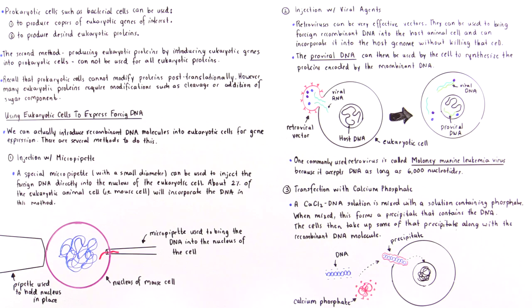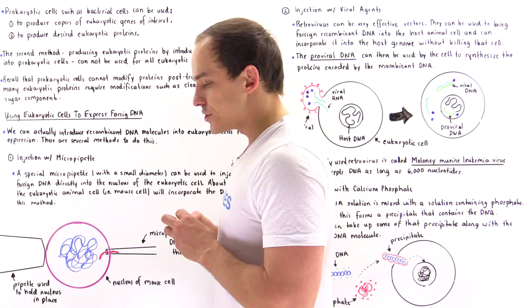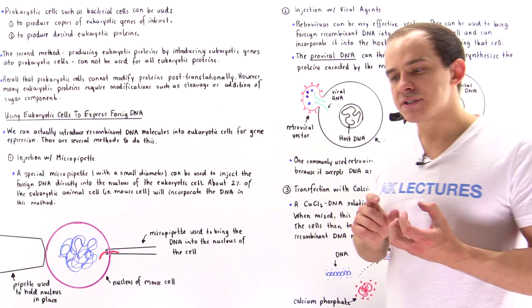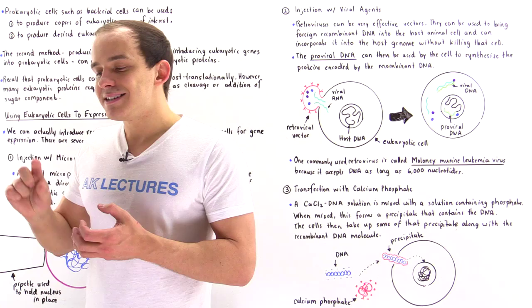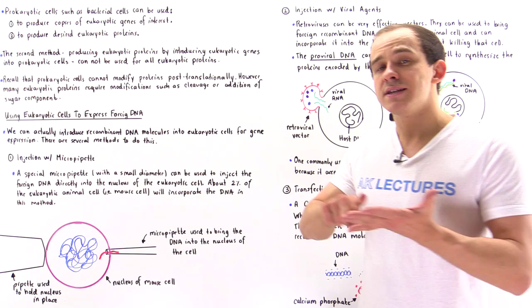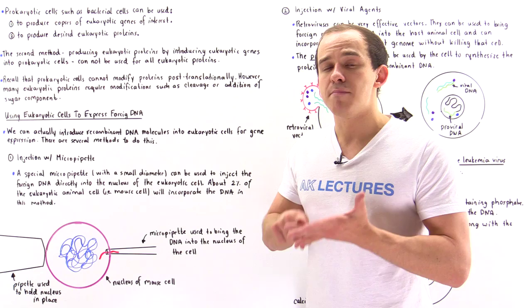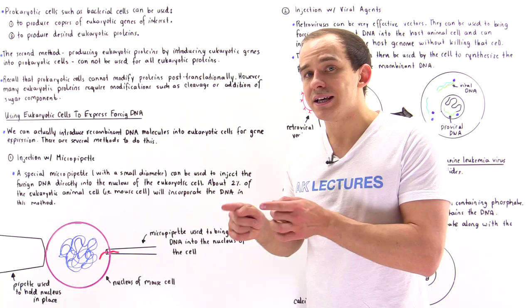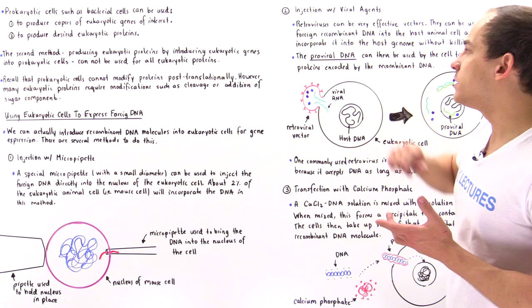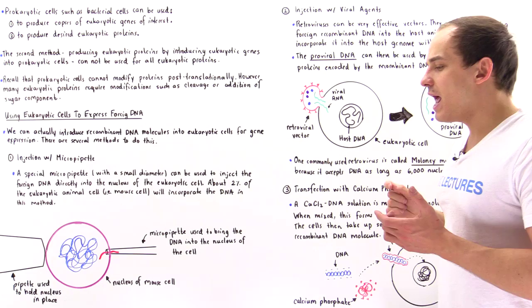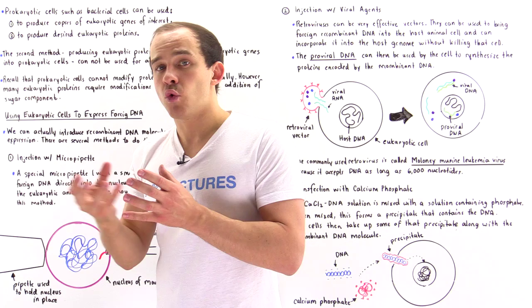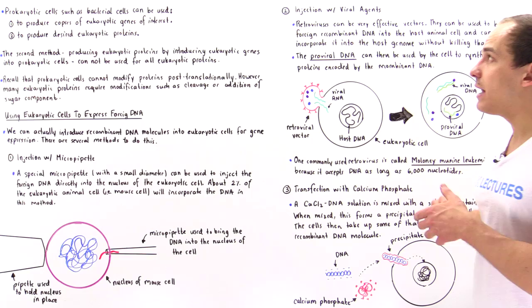Method number two is injection with viral agents, and the most effective viral agents are retroviruses. Retroviruses contain reverse transcriptase, an enzyme that reverse transcribes an RNA molecule into a DNA molecule. Once we produce that viral double-stranded DNA molecule in the cell, it is incorporated into the cell's genome to produce something called a provirus, or proviral DNA. The proviral DNA is the genome of the host cell that has incorporated the viral DNA we injected.